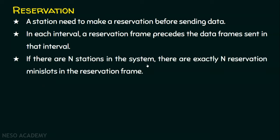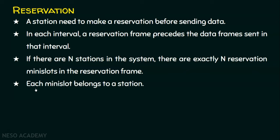If there are n stations in the system, there are exactly n reservation mini slots in the reservation frame. The reservation frame contains n mini slots — one per station — because we have n stations. Each mini slot belongs to one station. This point will become clear when we see an example.